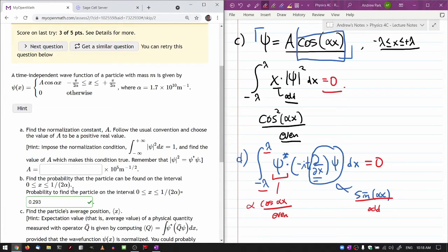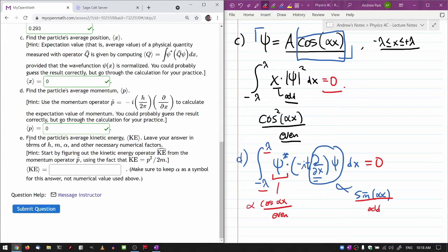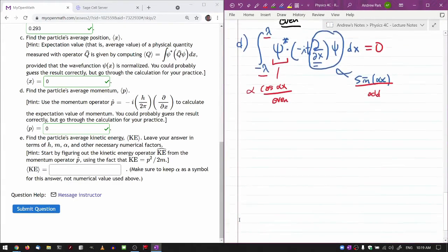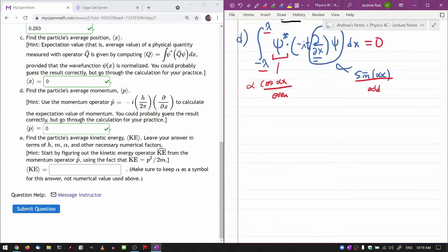Now, part e is where you do have to be careful. The easy mistake to make is to think, oh, my momentum was zero. So momentum squared over 2m, that's going to be zero again. And that's not the case. If you paid attention for the infinite square wall problem, you know that that's not the case. So with the part e, you can kind of see the hint that it doesn't hint that you can guess the result correctly. That's because you can't. You actually have to go through the calculation.